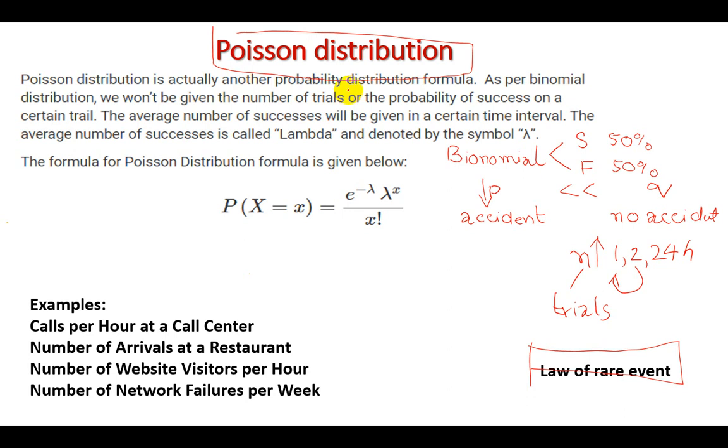Poisson distribution is actually another probability distribution formula. As per binomial distribution, we wouldn't be given the number of the trials or the probability of the success on a certain trial. The average number of the successes will be given in a certain time interval. The average number of the successes is called lambda. This distribution formula is represented by lambda. The probability mass function is something like this. Poisson distribution random variable x equal to x exponential minus lambda, lambda x divided by x factorial. So lambda, we have understood that lambda is the success value in the interval. The probability mass function is called distribution of any distribution. The values are discrete, but the probability density function is called for the probability density function.